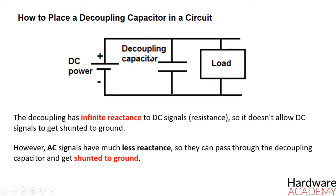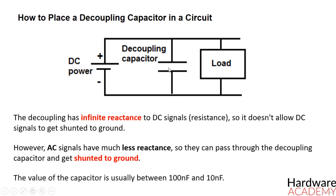This is how a decoupling capacitor decouples AC signals from DC signals. Typically, ceramic capacitors are the most predominant type used for decoupling. The value of the capacitor is usually between 10nF and 100nF. The most commonly used decoupling capacitor is a 100nF ceramic capacitor.